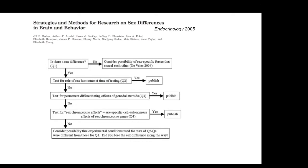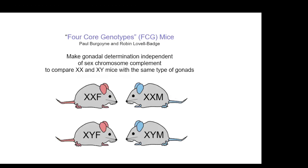I would now say that while this logic tree is still a useful progression for investigating sex differences in a mouse model, we now know there are more sex chromosome effects than we used to think, so it might be worth looking for sex chromosome effects earlier. Look for hormone effects too, but also look for sex chromosome effects pretty soon. The main animal model to ask whether there's a sex chromosome effect — and unfortunately we can only do this in mice so far — is called the four core genotypes.